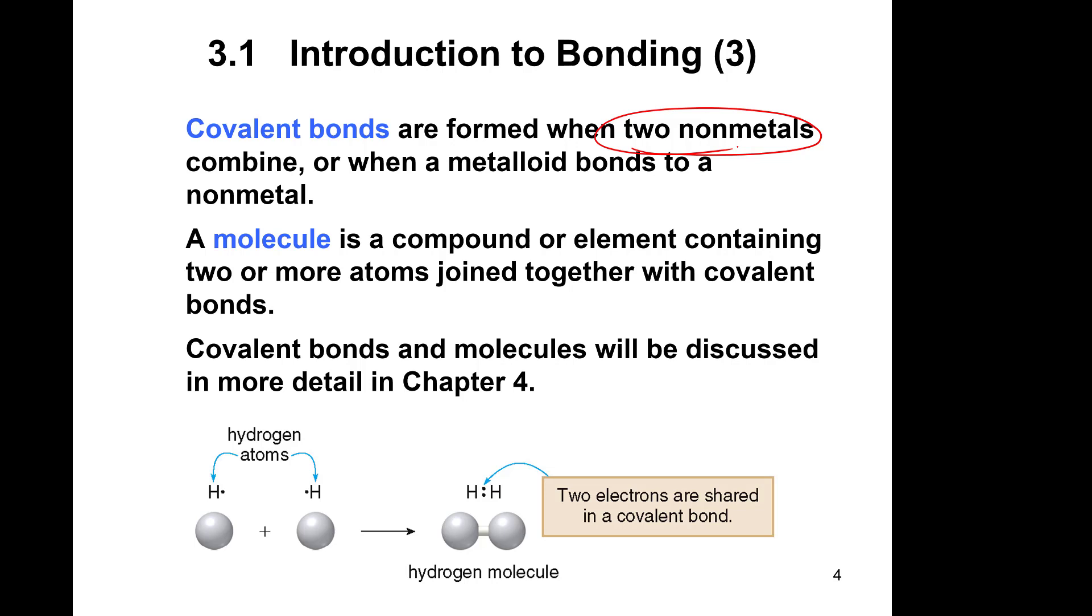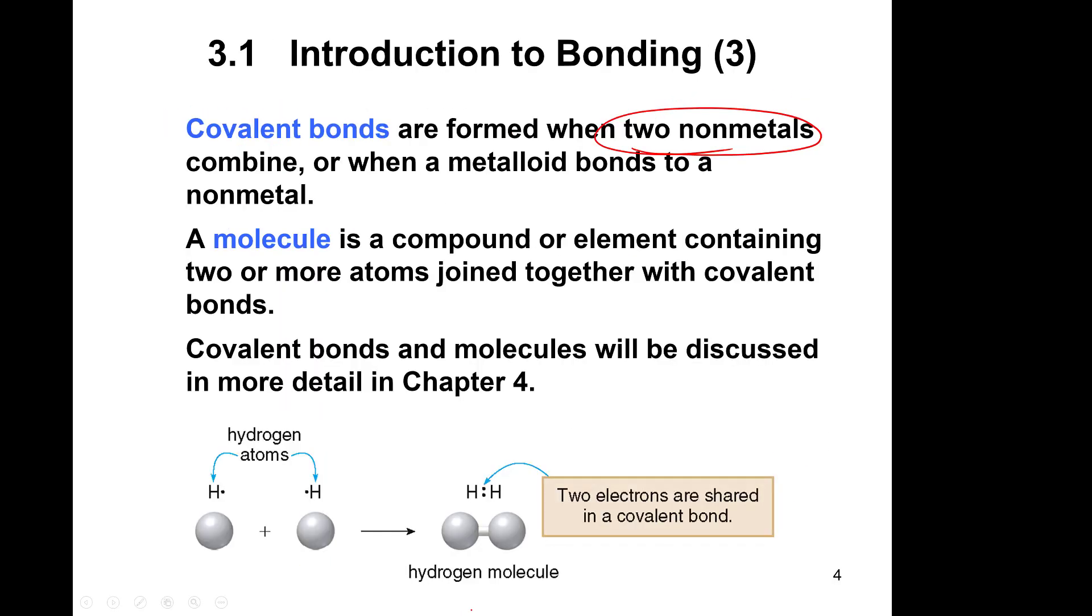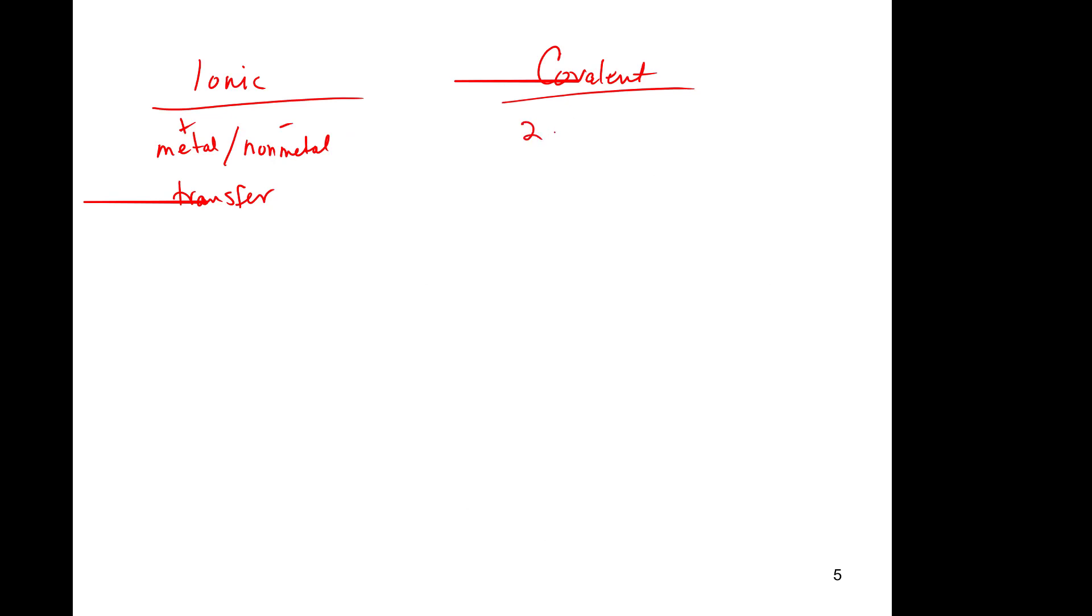The rest of Chapter 3 is going to be about ionic bonding. So just to recap: ionic bonding is going to be between a metal and a non-metal, and they are going to transfer electrons so that the metal has a positive charge and the non-metal has a negative charge. Covalent bonding is going to be between two non-metals, and they are going to share electrons, so you're not going to see charges.